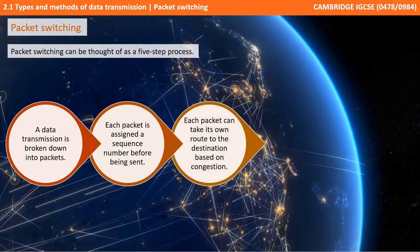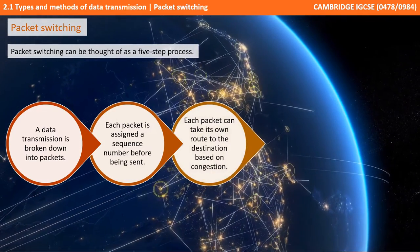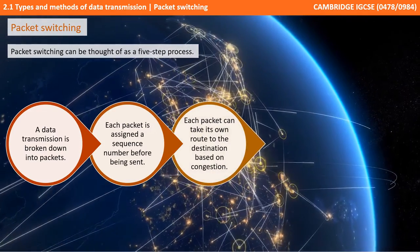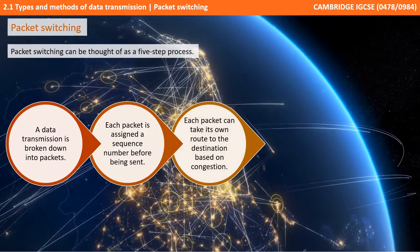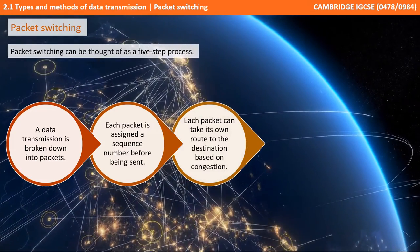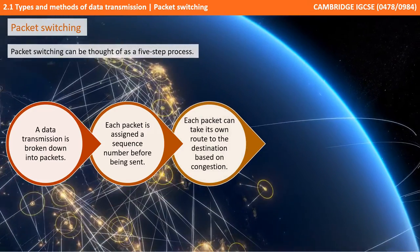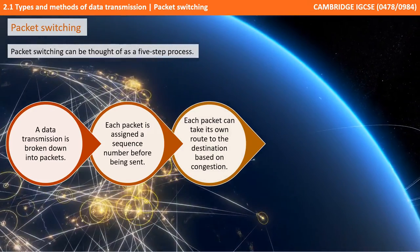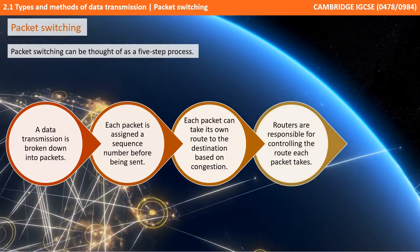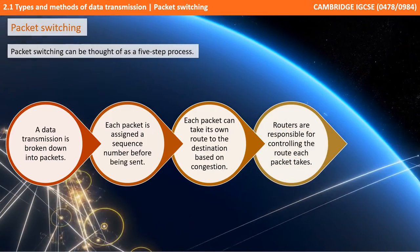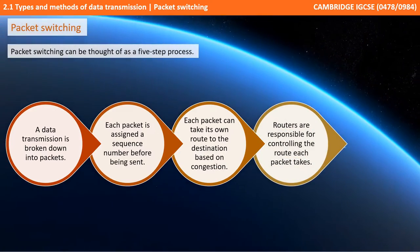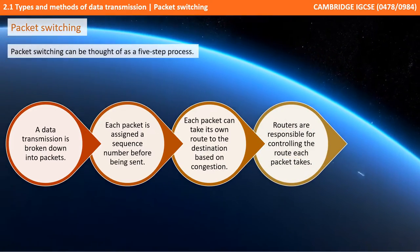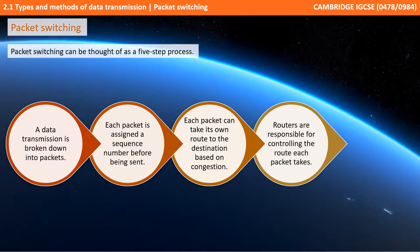Each packet is then able to take its own independent route to the destination based on the congestion of any route at a given time. Routers are responsible for controlling the route that each packet takes.